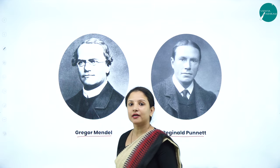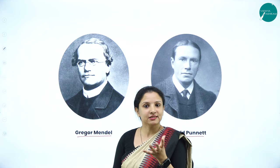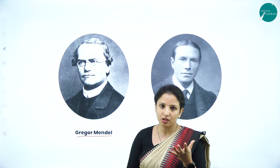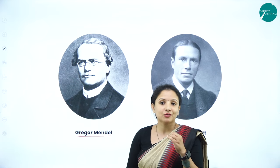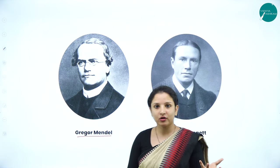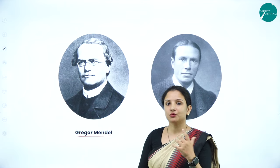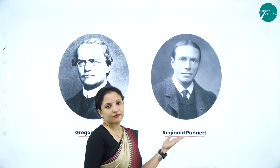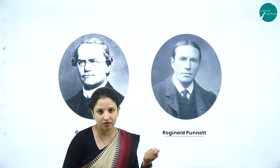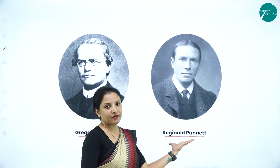Gregor Mendel is called the father of genetics because he was the first person to say there are things called factors present in pea plants which result in variation among a particular population. At that time he didn't know they were called genes, but he called them factors, and he proved how segregation of genes occurs. Reginald Punnett was the first person to give the Punnett square, which we use to calculate phenotypic or genotypic ratios.